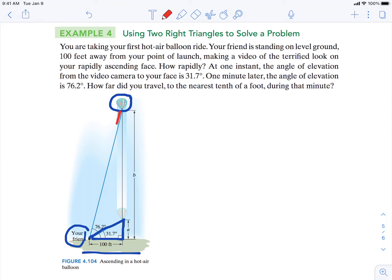And then we have a second right triangle that we'll do in red, creating the second angle of elevation of 76.2 degrees.